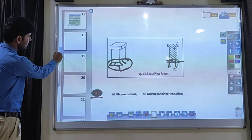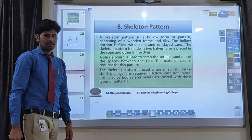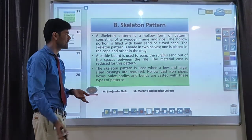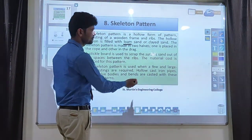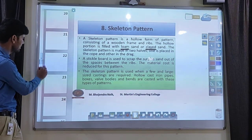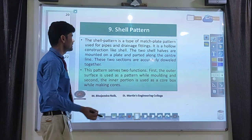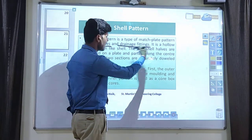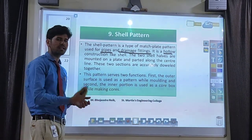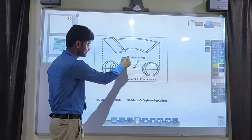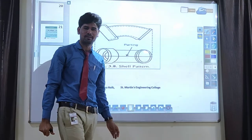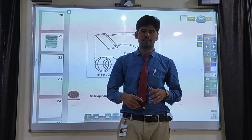Another type of pattern is called the shell pattern. In the shell pattern, the pattern has any kind of shallow shape. At that time, we can use different types of shell — a loam shell or a special kind of clay — and we can produce a hollow type of material. The shell pattern is best for producing pipes or cylindrical castings — it has some hollow part, similar to the skeleton pattern. Using special kinds of sand, you can produce a hollow kind of pattern. These are the different types of pattern. I hope you can understand all the different types of pattern. Next, we will discuss the pattern materials.